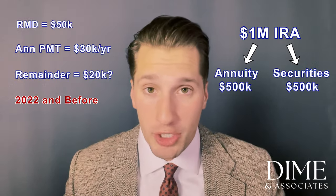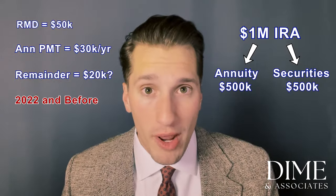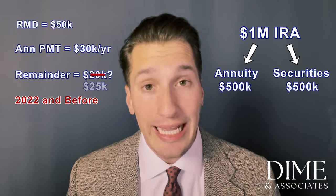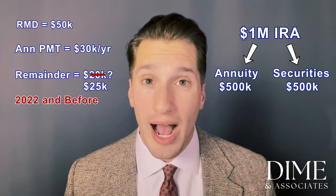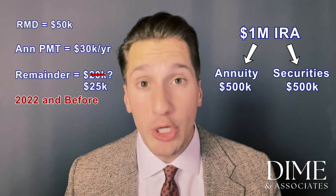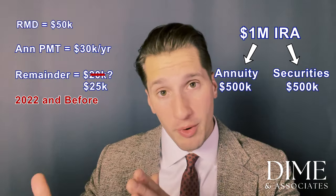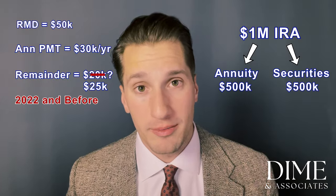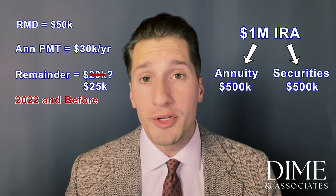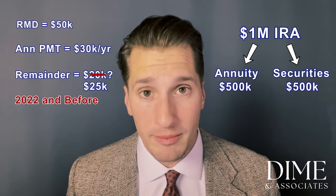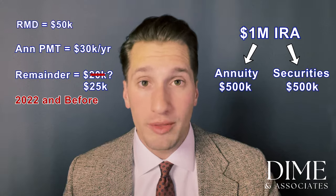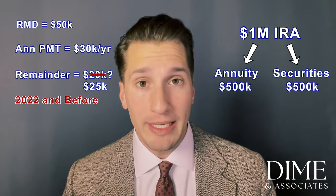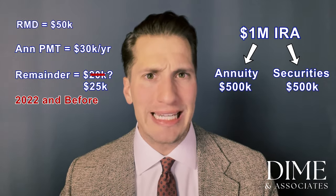That half of the IRA — if a million bucks had an RMD of $50,000 — would have also needed to take out $25,000. So while philosophically your total IRA RMD was $50,000, you would have actually pulled out $30,000 from the annuity and $25,000 from the securities, for a total of $55,000 — $5,000 more than you philosophically needed to. That was how the rules were written, and intuitively it doesn't make a lot of sense — but not many things do in the tax space.